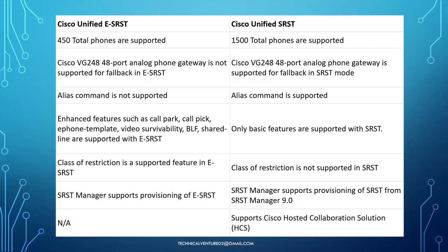Now let's look at the differences between SRST and e-SRST. SRST provides basic features and supports up to 1,500 total phones, while e-SRST provides advanced features but supports only 450 phones. e-SRST supports fewer phones but more features; traditional SRST supports more phones but only basic features. With enhanced SRST you can do call park, call pickup, and even hunt groups — which are not available in normal traditional SRST.